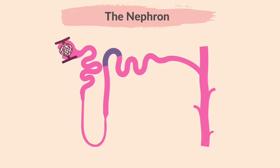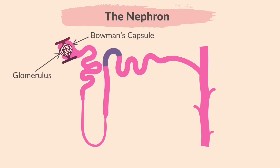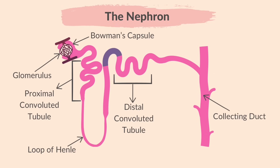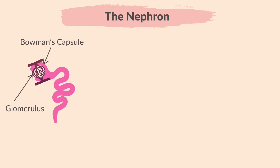This is a nephron. This is the glomerulus. This is called the Bowman's capsule. This is the loop of Henle. This is the proximal convoluted tubule, this is the distal convoluted tubule, and this is the collecting duct. Arterioles from the renal artery form a knot of capillaries called the glomerulus, which sits inside the cup-shaped structure of the nephron called the Bowman's capsule.